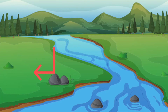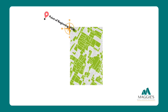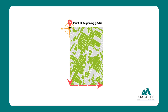Here's how it all works: we begin with a point of beginning, which is the direction from the monument to the edge of the property. The survey continues to describe the directions and distances — the metes and bounds — that make up the perimeter of the property until it returns to the point of beginning, which is called a closing.